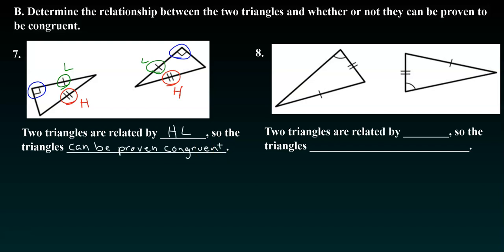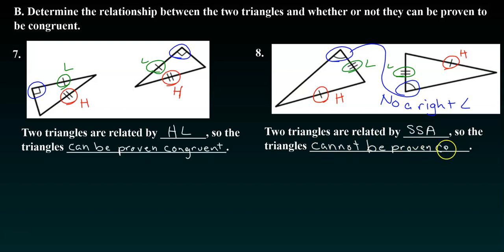So looking at the one next to it, we also have the hypotenuse, we also have a leg, but our angle this time, though it is congruent, is not a right angle. So because it's not a right angle, this is a side-side-angle, and it cannot be proven congruent.